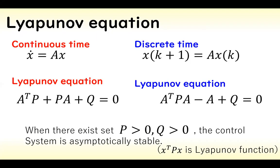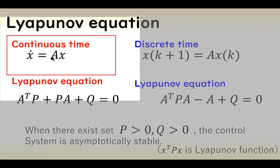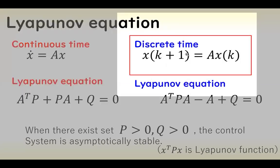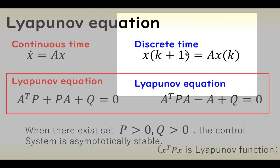These equations are standard dynamical systems. This shows the continuous-time autonomous system and this shows the discrete-time system. We check the stability of the control system using Lyapunov equations.